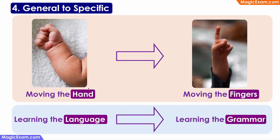The next important principle of development is something called general to specific. For example, if you look at physical development, the child will first learn to move the entire hand, which is a general movement. And only then the child will learn to move each finger specifically or independently.